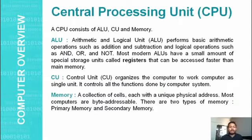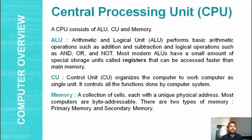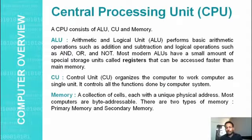Memory is used to store the data. A collection of cells is called a memory, and each cell has a unique physical address. Most computers are byte-addressable, meaning memory is measured in bytes. There are two types of memory: primary memory and secondary memory, which we will discuss later.